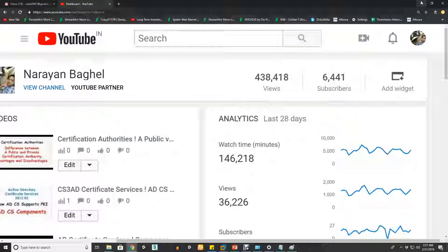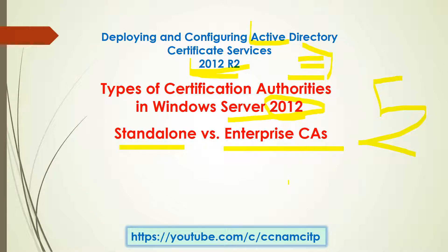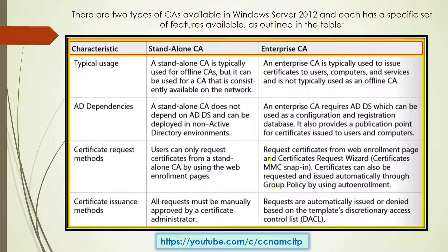Basically, there are two types of certificate authority — nothing more than that. One is standalone and the second one is enterprise. There is a difference and there is a separate usage scenario for both of them. Let's look at their characteristics.